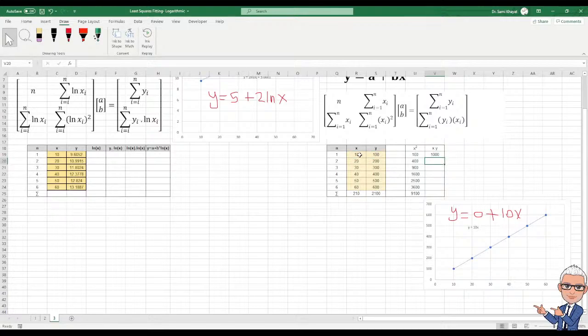And then for this one equals x times y, enter. Ten times one hundred is one thousand. You can copy paste this one.